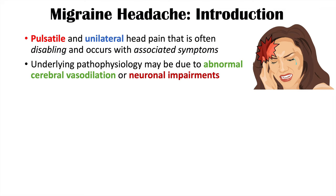It's believed that the underlying pathophysiology of migraine headaches may be due to abnormal cerebral vasodilation or neuronal impairments. Abnormal cerebral vasodilation is where the vasculature in your head becomes dilated abnormally, and these will tie into the dietary triggers we talk about later in this lesson.